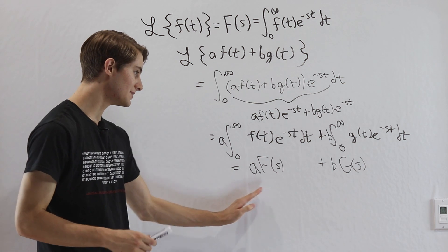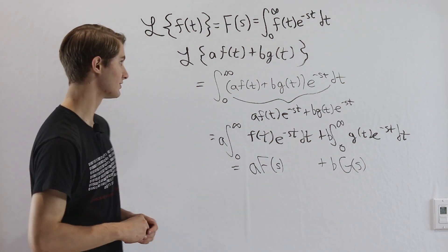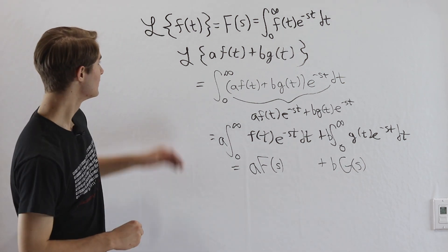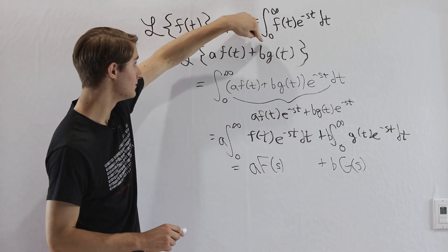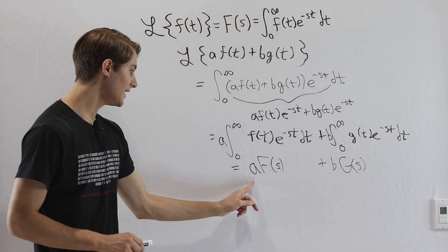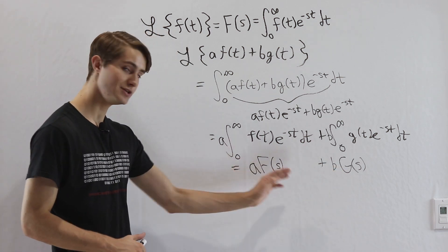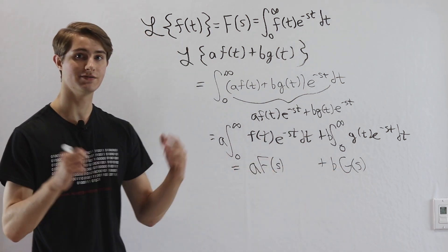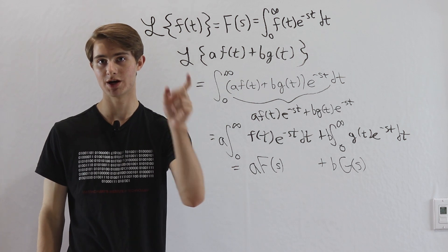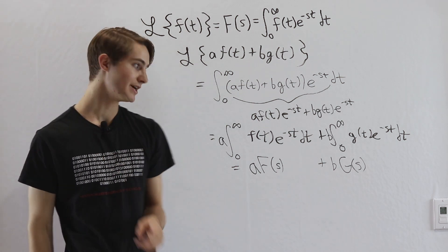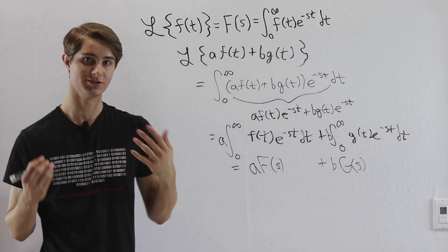This property is known as the linearity of the Laplace transform: the transform of a·f(t) plus b·g(t) equals a·F(s) plus b·G(s). This is useful because when we have a differential equation with y double prime, y prime, and y added together, we can split all the parts up and handle each separately.